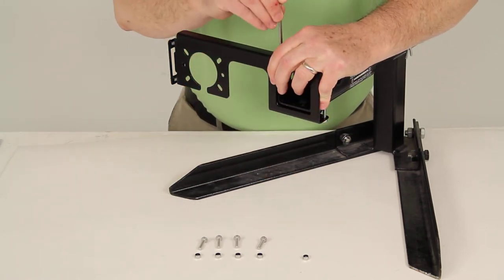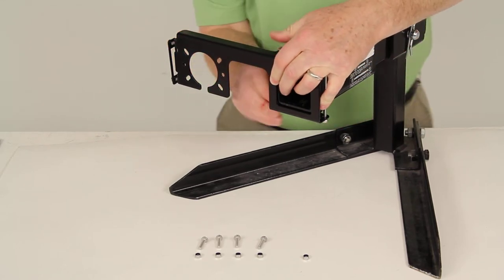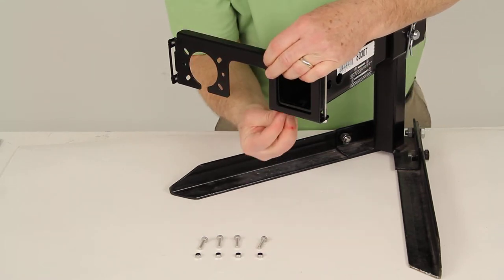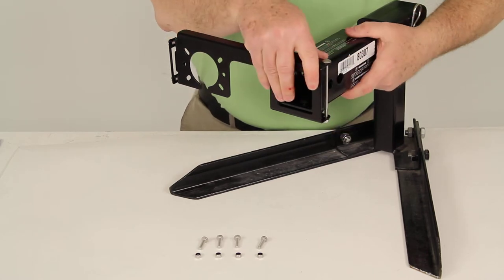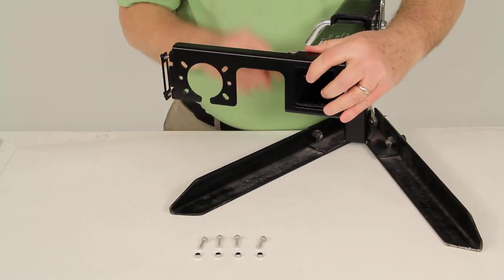Take your other long carriage bolt, slide it down through, there you go. Then take the nut, put it on, tighten it down, tighten both these down and it would hold this bracket very securely onto your hitch opening.